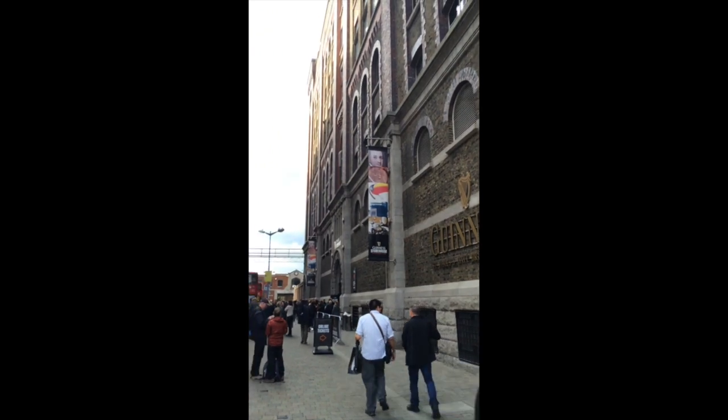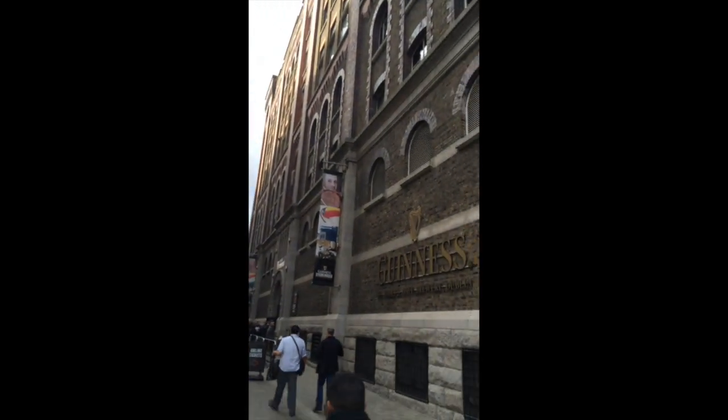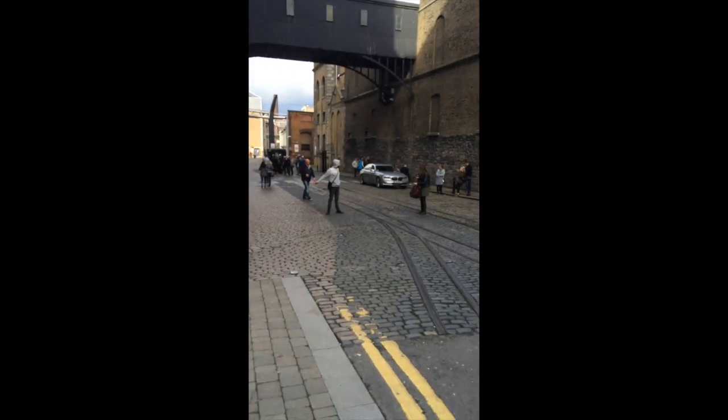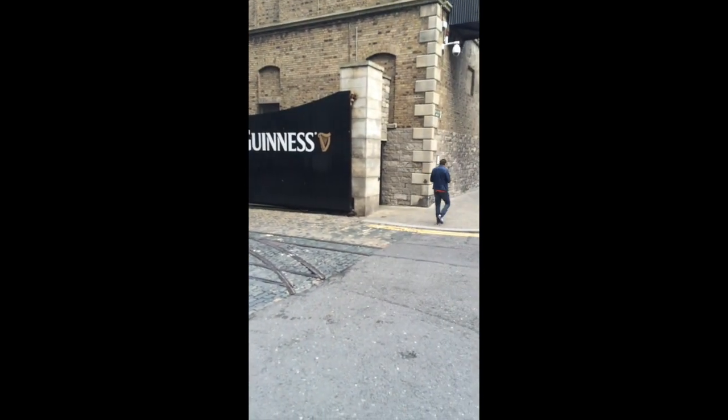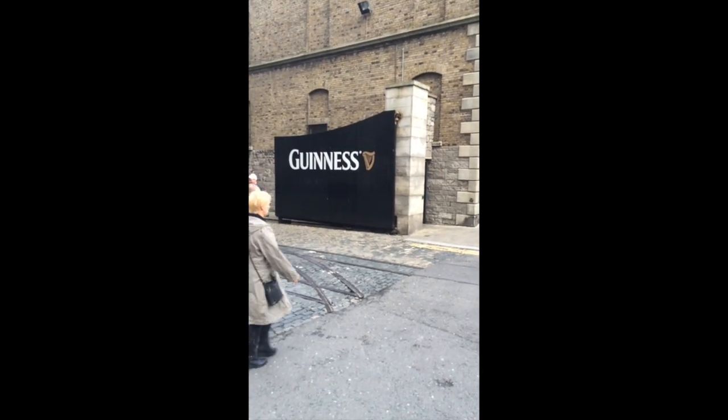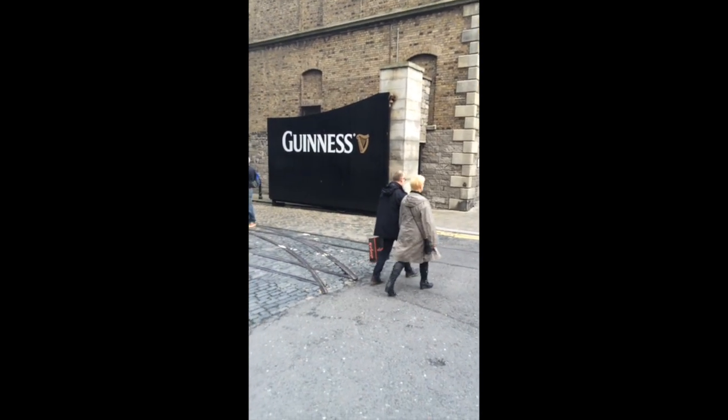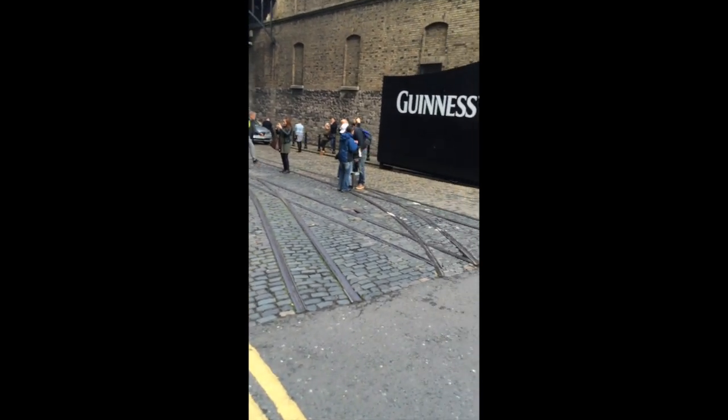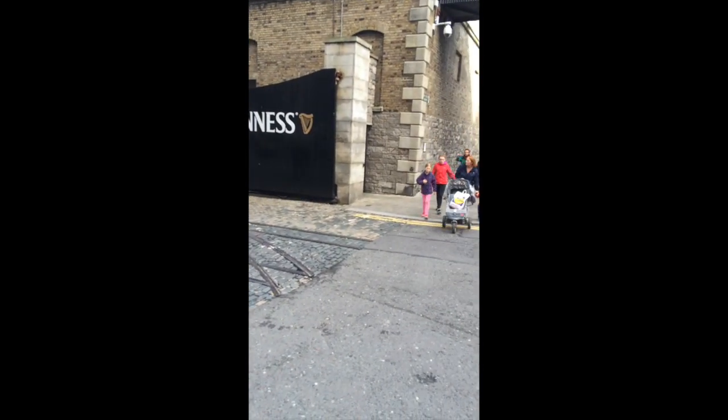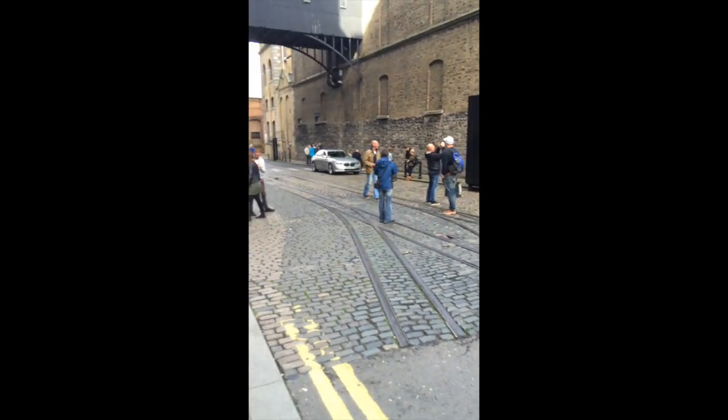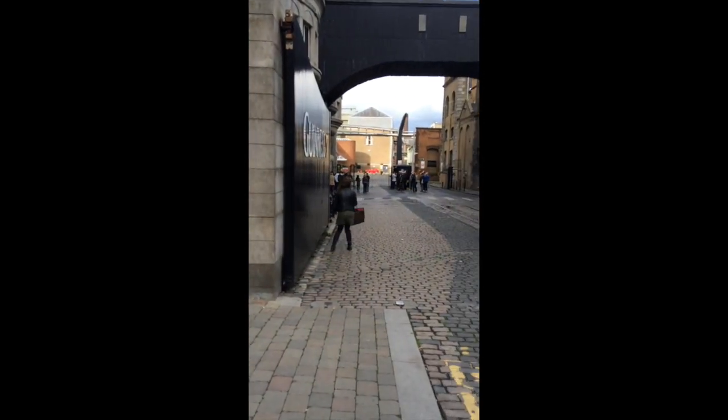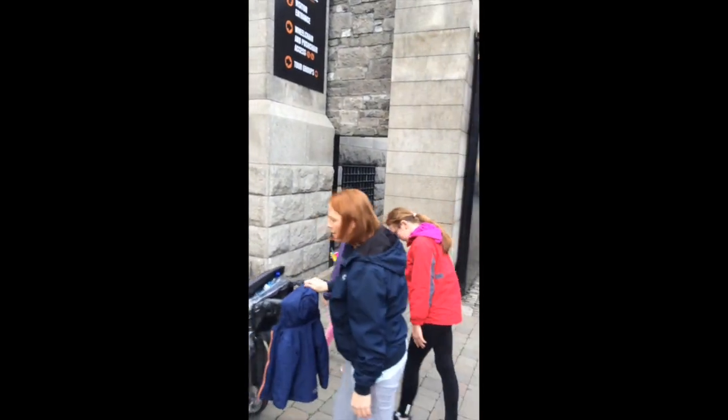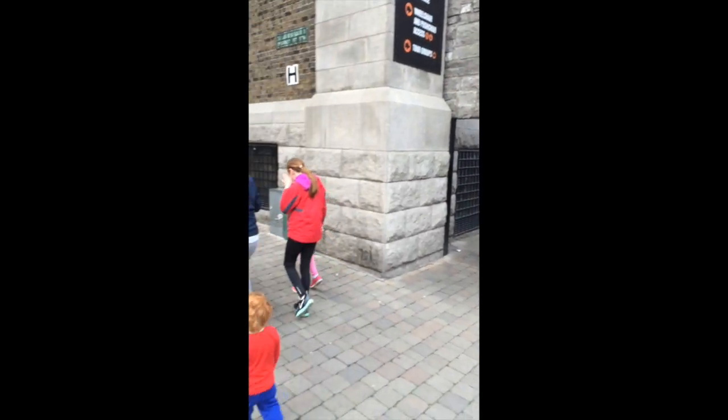He developed this distribution, but Guinness did not allow its employees to publish their research. And so he published it anonymously as the student distribution. And over time it became known as the student t-distribution. So here it is, and here we are in Dublin at the Guinness Storehouse where it all happened. And now today the t-distribution is perhaps the most important distribution used in elementary, introductory statistics courses.